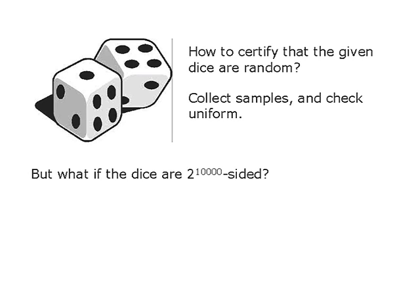I'll talk about how to generate randomness in a more certifiable manner. This is joint work with my former student Tomah Vidic, who is now at MIT. So what's the main question? We are given some source of randomness and we want to certify that the output is truly random.